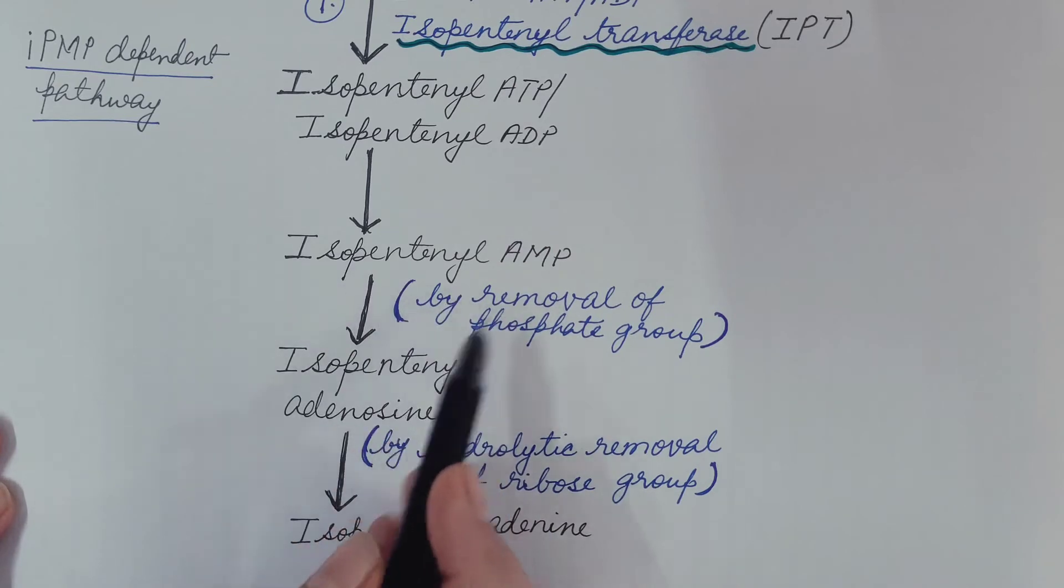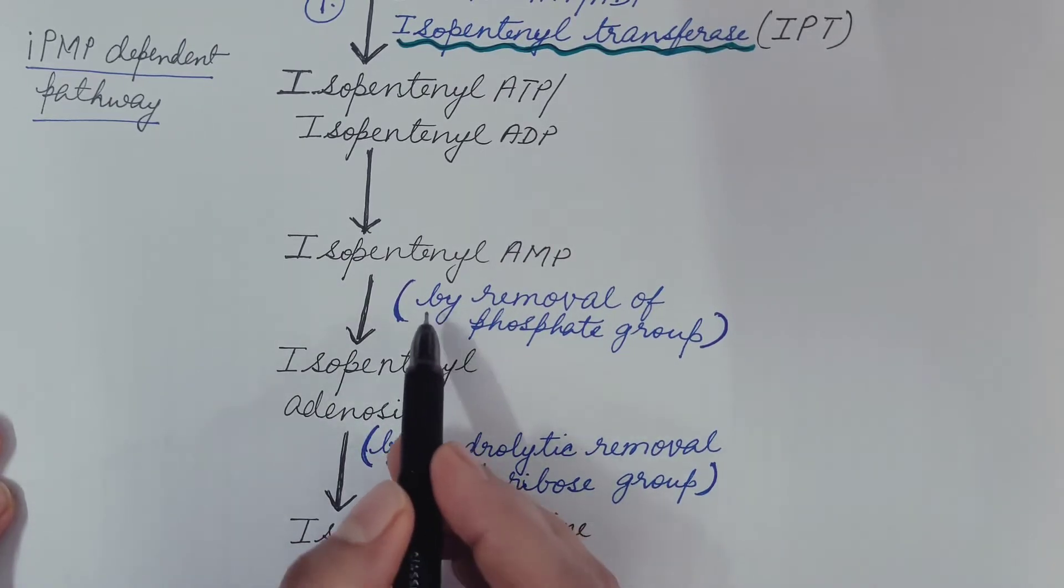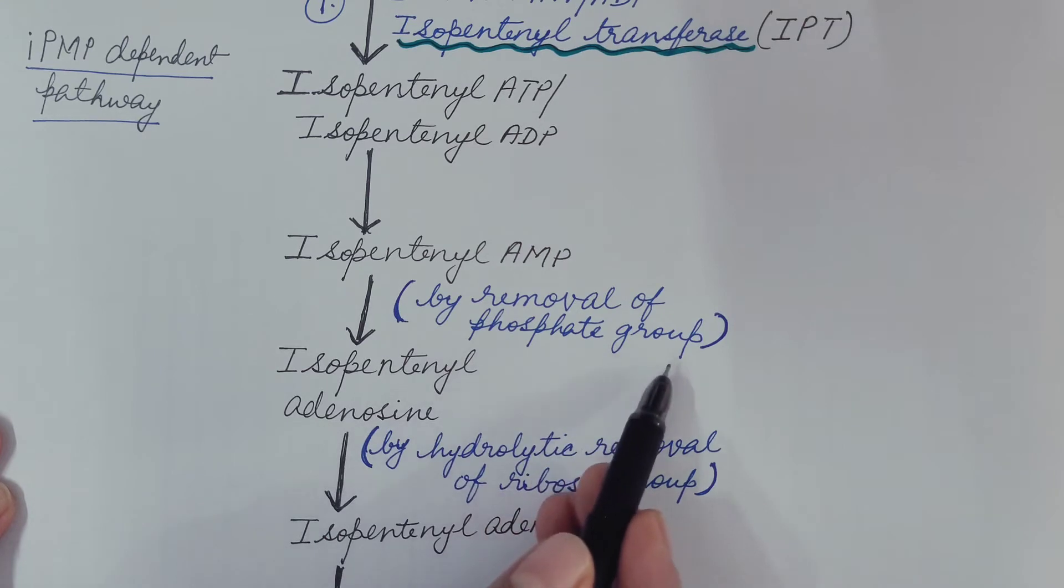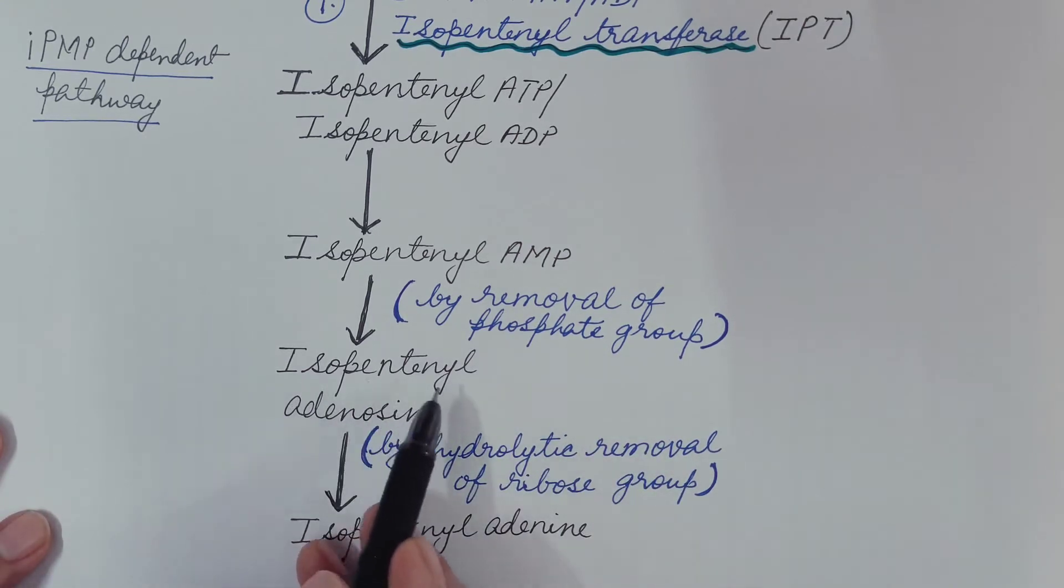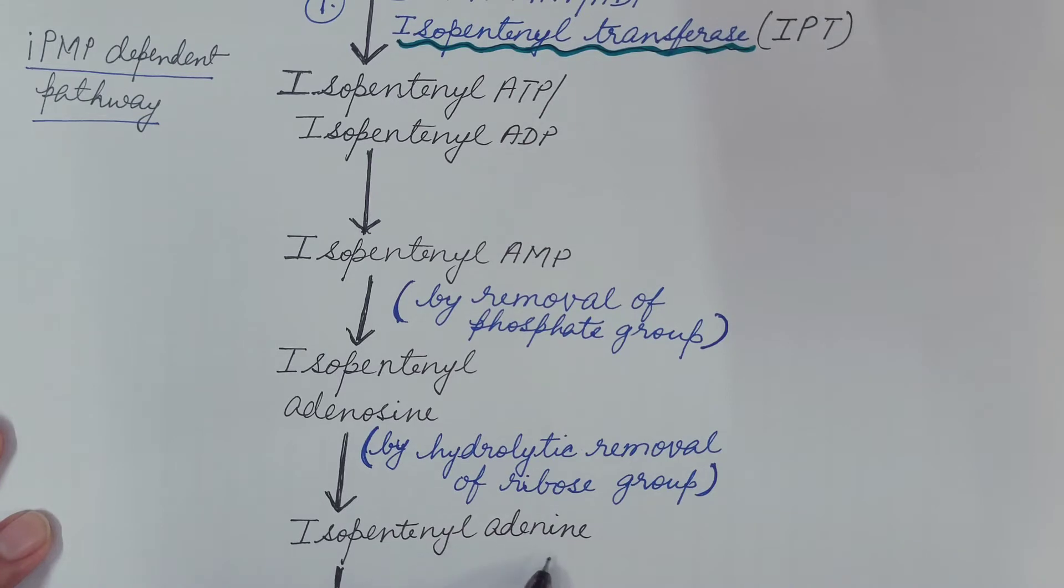It is then converted into isopentanyl adenosine by removal of phosphate group. Then isopentanyl adenosine is converted into isopentanyl adenine by hydrolytic removal of ribose group.